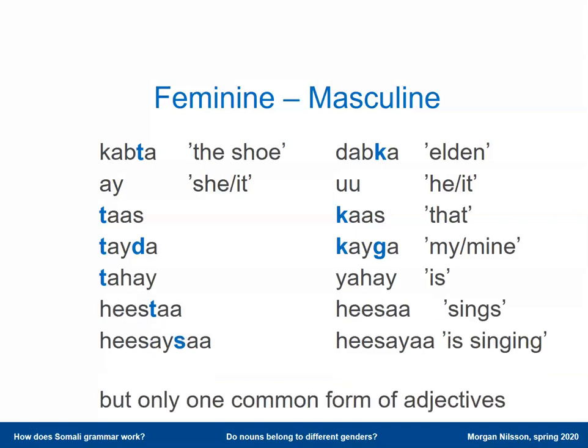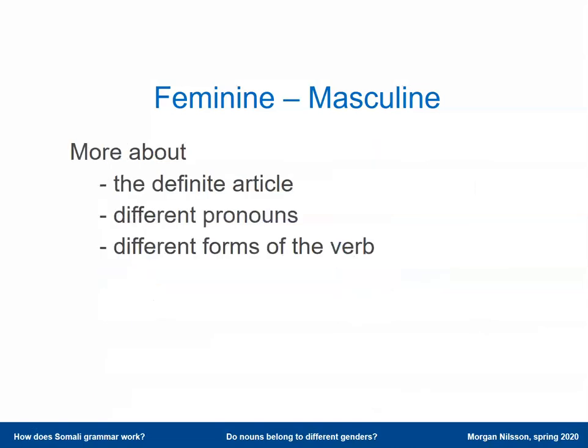When it comes to adjectives in Somali, there are no gender forms. A Somali adjective has the same form together with both feminine and masculine nouns — no difference there. So that was a very short first introduction to the notion of gender in Somali. There is of course more to say about the definite article, the pronouns, and the different forms of the verb, but we will come back to that later.